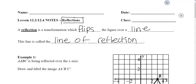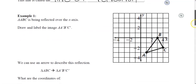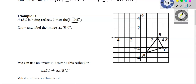In today's lesson, we are reflecting over the x-axis or over the y-axis — literally flipping the figure over, just like a mirror reflection. This is an easy lesson. Example number one: triangle ABC is being reflected over the x-axis. The first thing you want to do is highlight your x-axis.